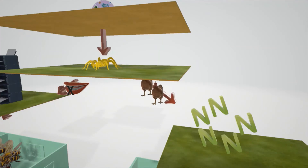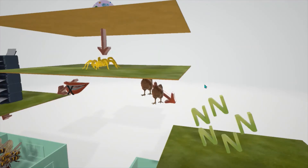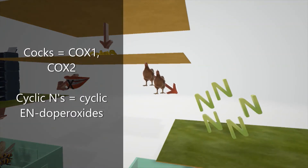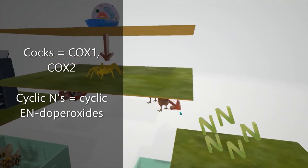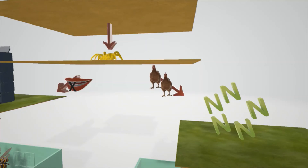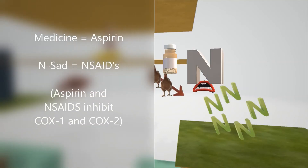Arachidonic acid can also be converted into prostaglandins through COX-1 and COX-2. COX-1 and COX-2 are responsible for the conversion of arachidonic acid, first to the cyclic endoperoxides — represented by 'cyclic ends' in the scene. Aspirin and NSAIDs are responsible for blocking this step — represented by the sad N and medicine trying to stop the conversion — blocking COX-1 and COX-2.